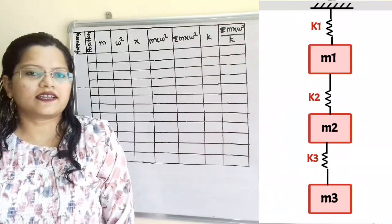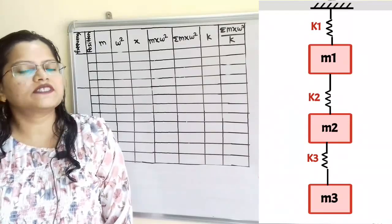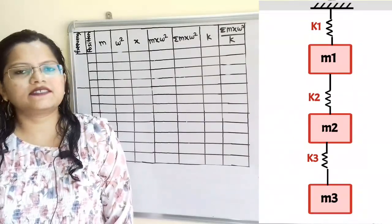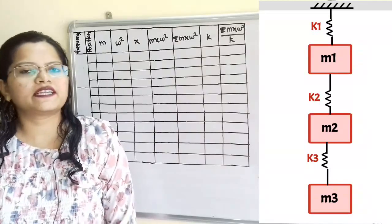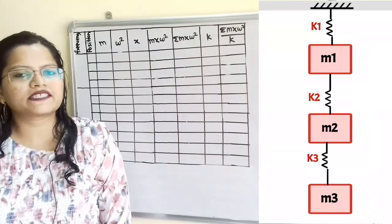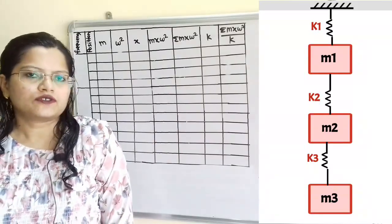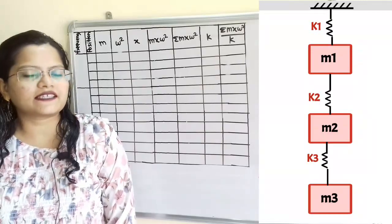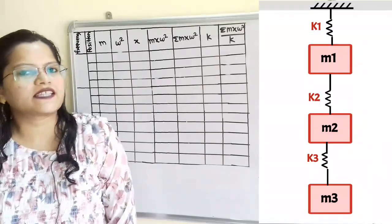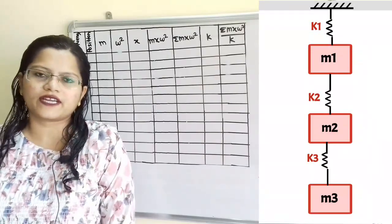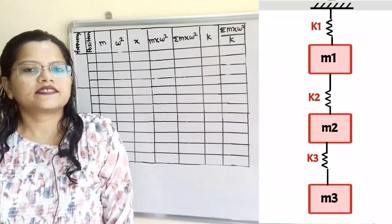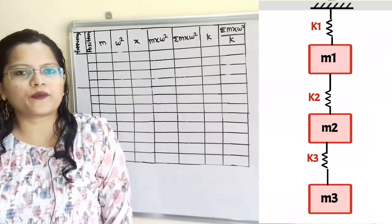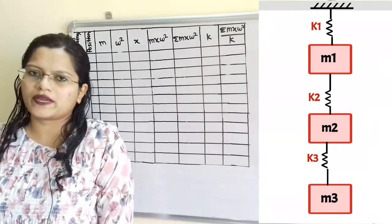Let us understand the given spring-mass system. There are three masses M1, M2, M3 with displacements X1, X2, X3. So for these three linear displacements, we can say there are three degrees of freedom and there are three natural frequencies: omega 1, omega 2, and omega 3.